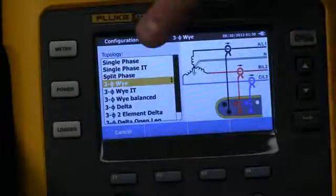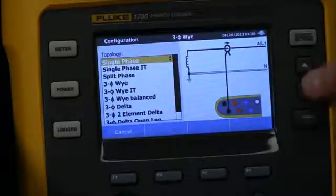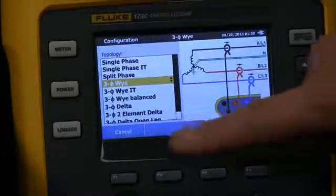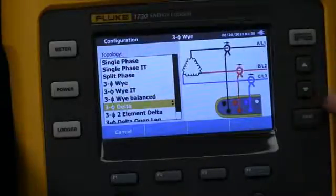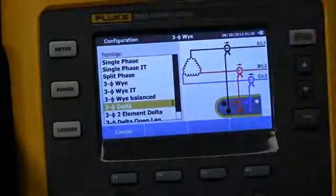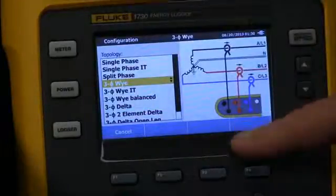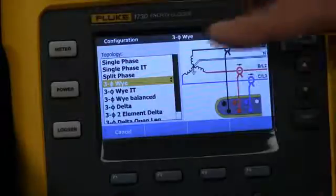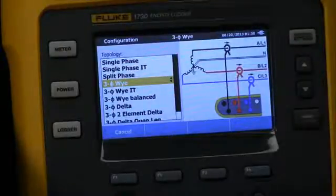Whether it be single phase, if I scroll up to single phase, you'll see that identified here, three phase Y or possibly a three phase delta or anything else in between. Now as we go up here to our three phase Y, it's going to also show us the connection for voltage and for current which makes this very easy for us.